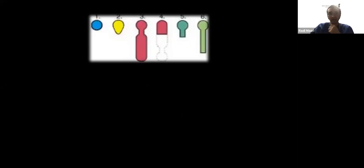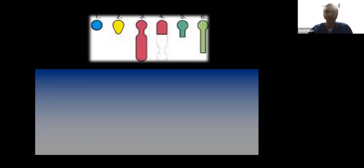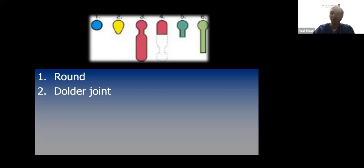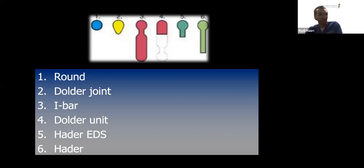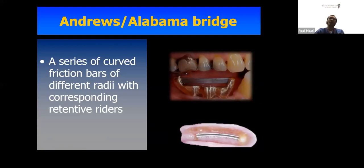A quick exercise on cross-section shapes: number one is a round bar, number two is a Dolder joint, number three is an I-bar similar to the round bar or Hader clip, number four is the Dolder unit, number five is the Hader EDS, and number six is the original long-profile Hader bar as initially described.